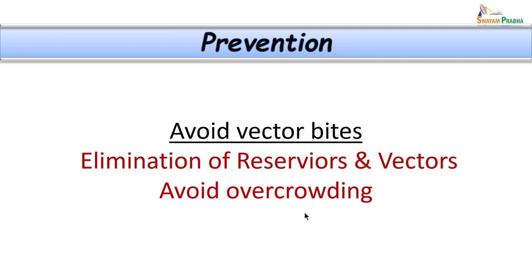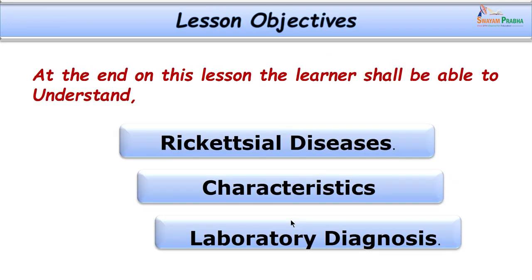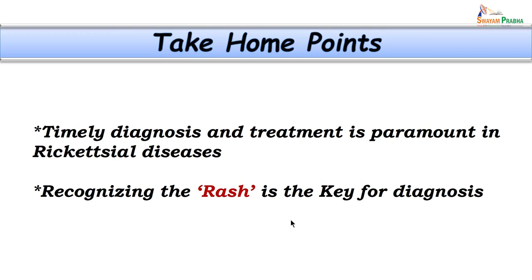Prevention involves avoiding vector contact and eliminating reservoirs. It is also suggested to improve sanitary measures and avoid overcrowding. In this class we have learnt details of the diseases, organism characteristics and an approach to laboratory diagnosis of rickettsial infections. The key take-home point is that timely diagnosis and treatment of rickettsial infections is very important, as is recognizing the rash and taking a detailed history of its development. Thank you very much for your attention.